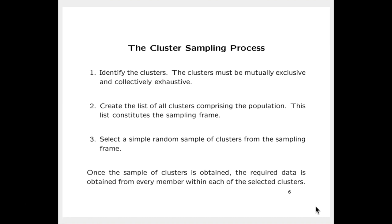Here is the cluster sampling process. First, we have to identify the clusters. The clusters must be mutually exclusive and collectively exhaustive. Second, we need to create a list of all clusters comprising the population — this list constitutes the sampling frame. Third, select a simple random sample of clusters from the sampling frame. Once the sample of clusters is obtained, the required data is obtained from every member within each of the selected clusters.